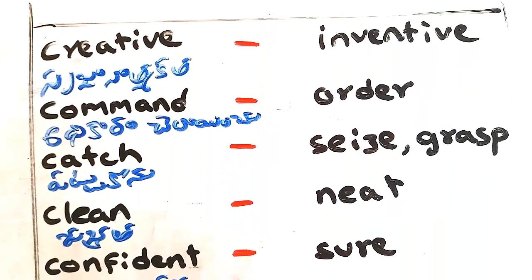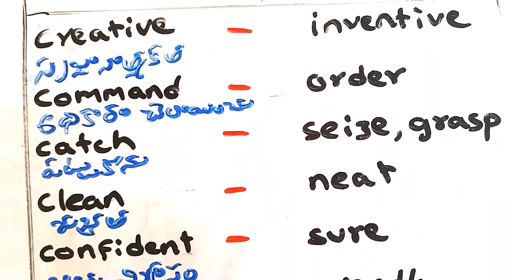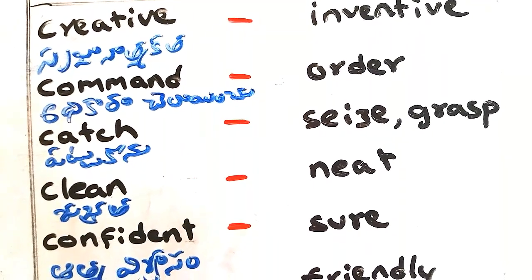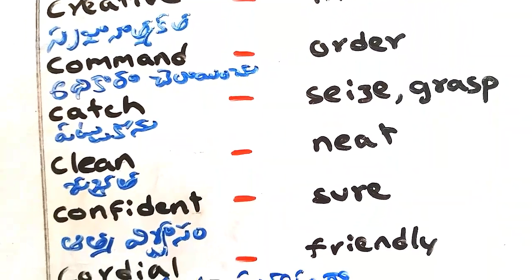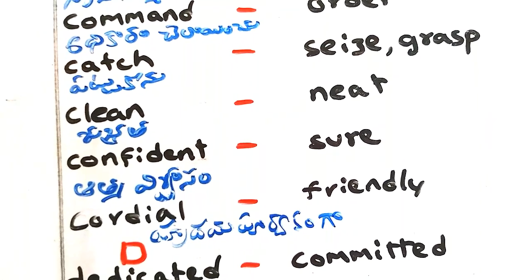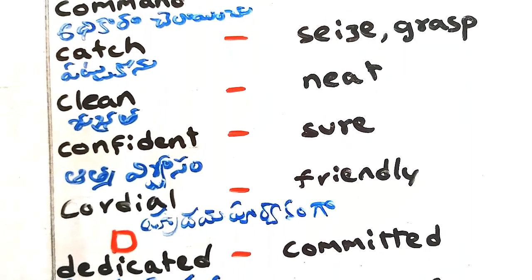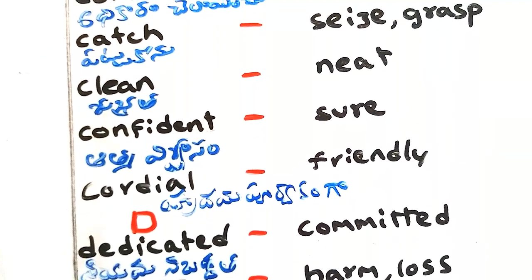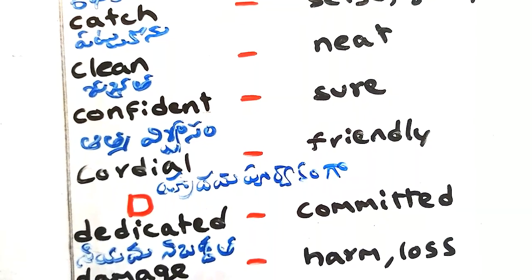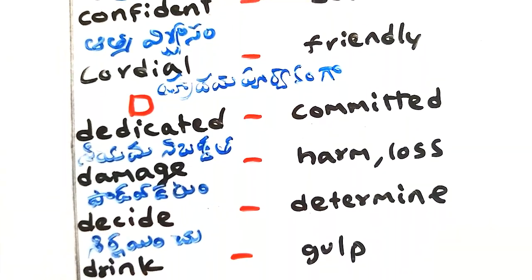Command - adhikarang chalainchu, order. Catch - pattukonu, seize, grasp. Clean - subrata, neat. Confident - atmaviswawasam, sure. Cordial - kroodayapurakanga, friendly. Next, D-Words.